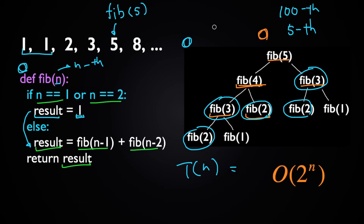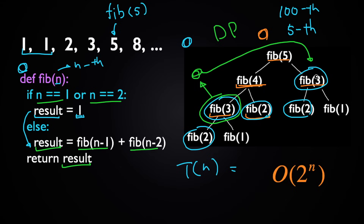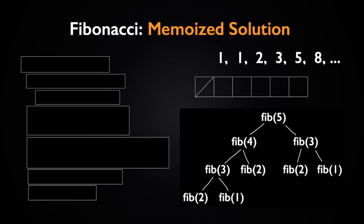Dynamic programming says: why not just store those return values? For example, for fib(3), store the return value once we compute it, and then use that same stored value when we see fib(3) again instead of computing it again. This process is called memoization.